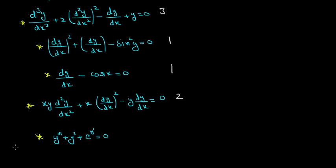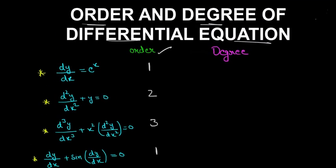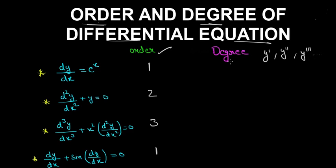Comment down below: what is the order of this differential equation? Now let us see what is the degree of a differential equation. Degree is the power of the highest derivative. First you find the order — the highest derivative — then you see its power. But the differential equation must be in polynomial form in terms of y', y'', y''' and so on. If it is not in polynomial form, then the degree is not defined.